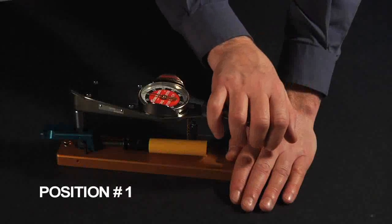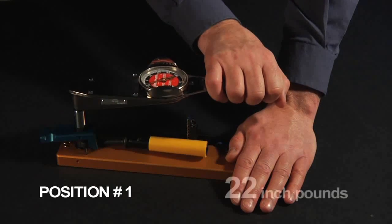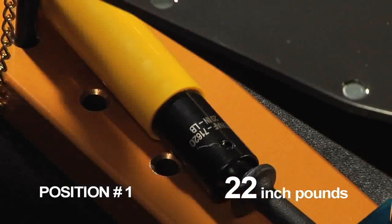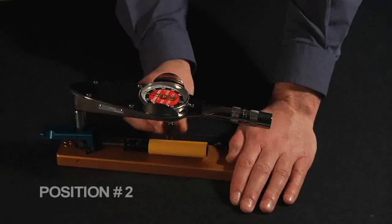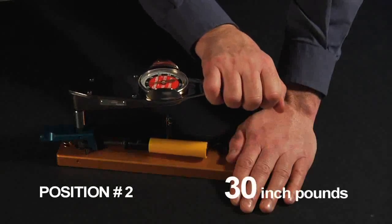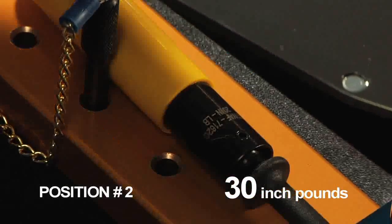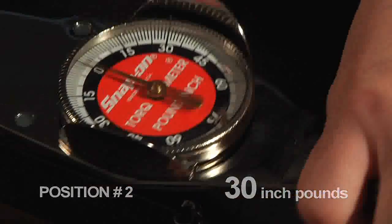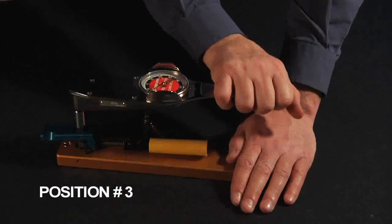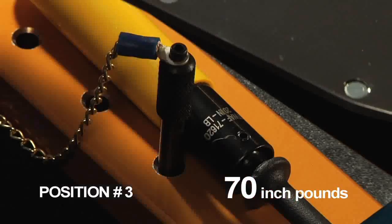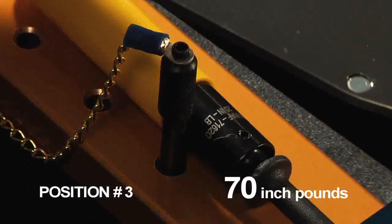The second competitor's wrench provides a torque of 22 inch-pounds when gripped at position one. When gripped at position two, a torque of 30 inch-pounds is exerted. And when gripped at the third position, a torque of 70 inch-pounds is exerted on the F-connector.